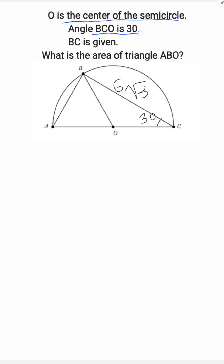O is the center of the semicircle. Angle BCO is 30°, BC is given. What's the area of triangle ABO?